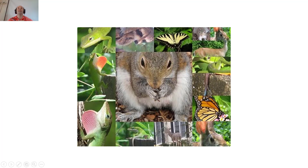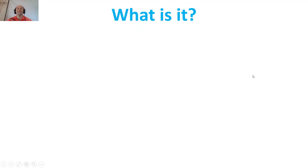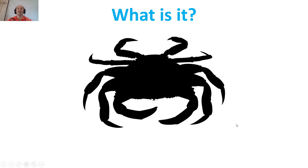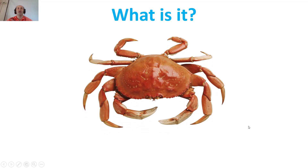We are still learning about animals. So let's start with some animals. What is it? Maybe you know them. What is this? Can you tell me? This is an animal that lives in the sea and some people like to eat it. It is a crab.